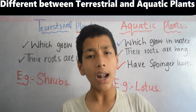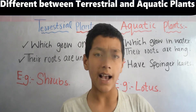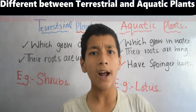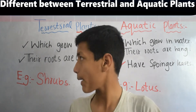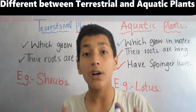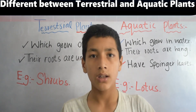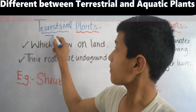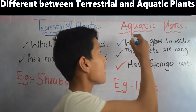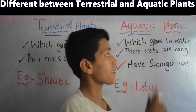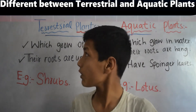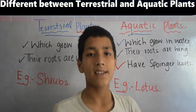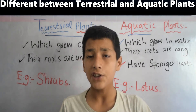All living organisms use this oxygen to live. Now, plants are divided into two types on the basis of where they grow. The first one is terrestrial plants and the second one is aquatic plants. What is the main difference between terrestrial plants and aquatic plants? Let's discuss each in detail.